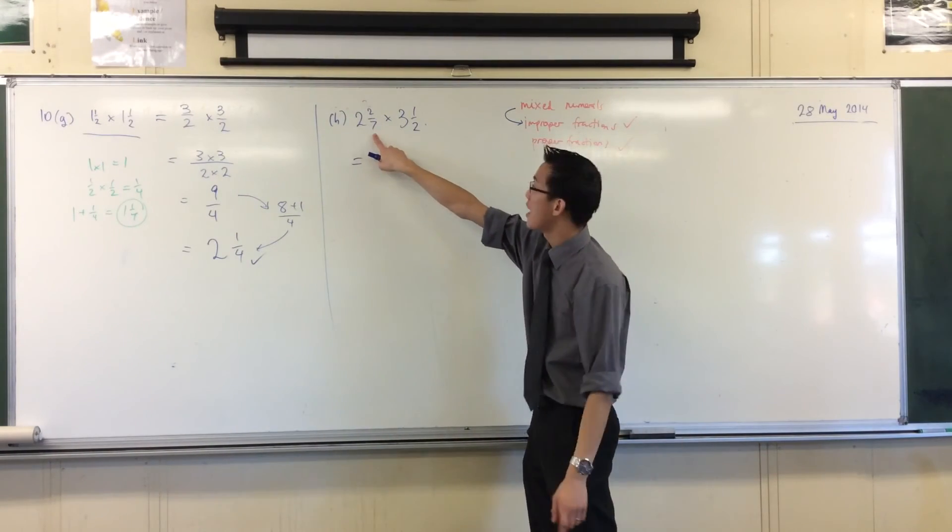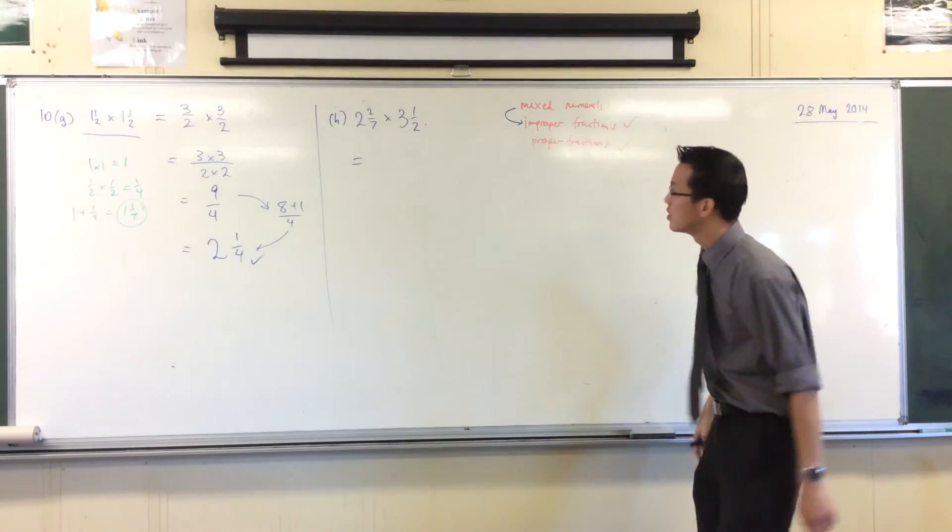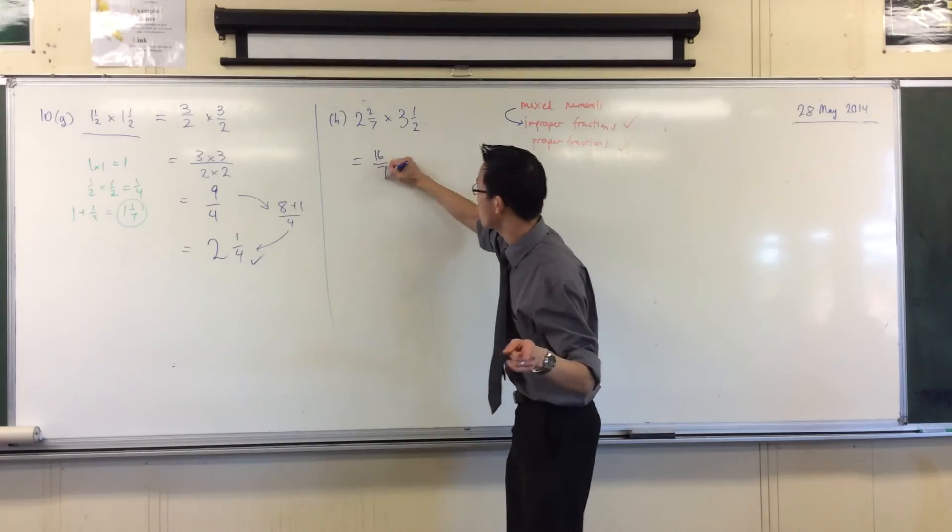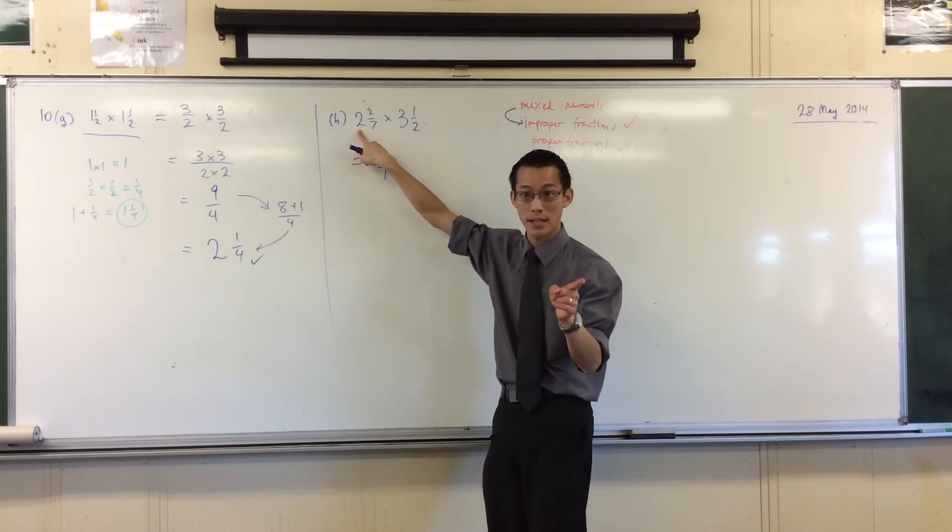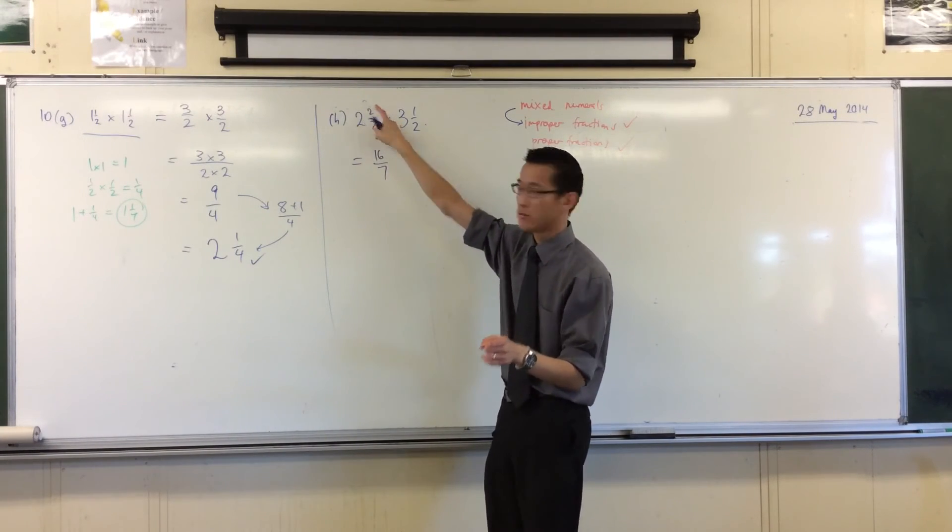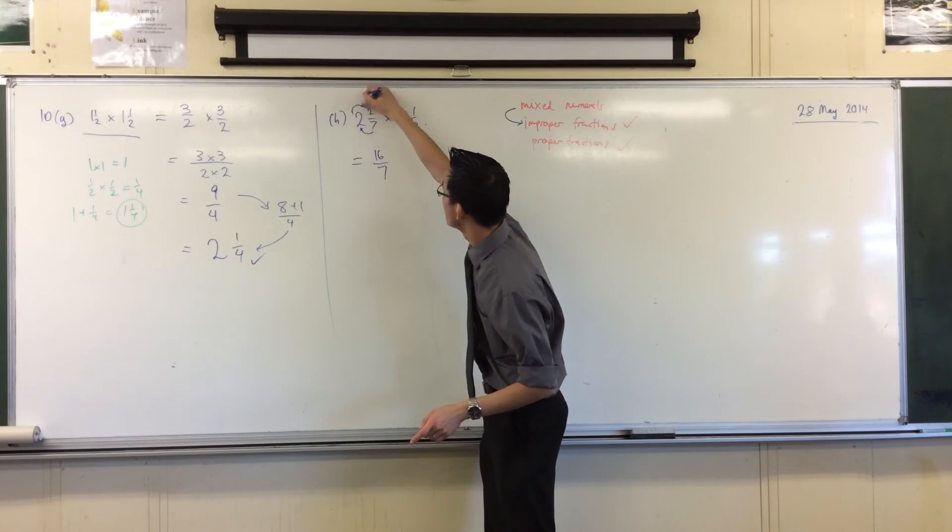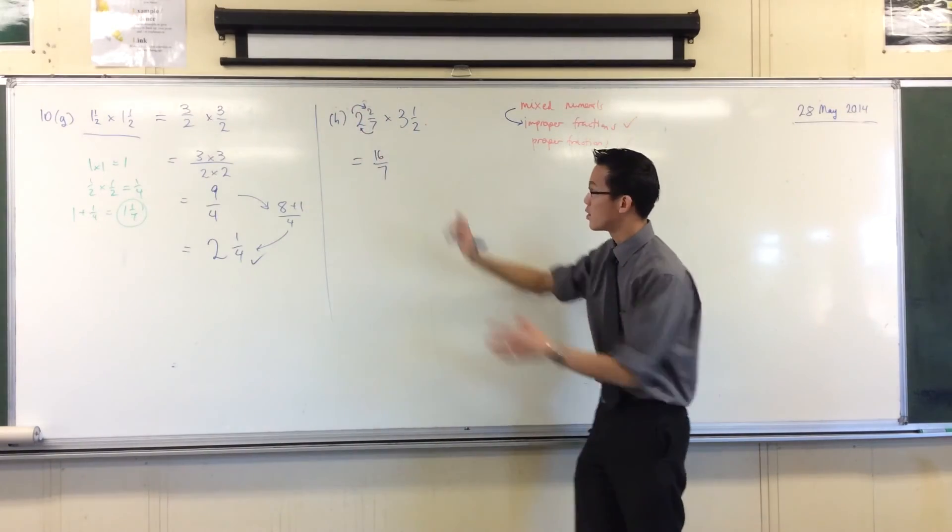Alina, do you reckon you could convert that into an improper fraction for me? 16 over 7. Well done, okay, so if you didn't see that straight away, the 16 comes from 7 times 2, which is 14, plus 2. So it sort of goes around, if you remember me doing that diagram, right? Okay, so 16 over 7, good.